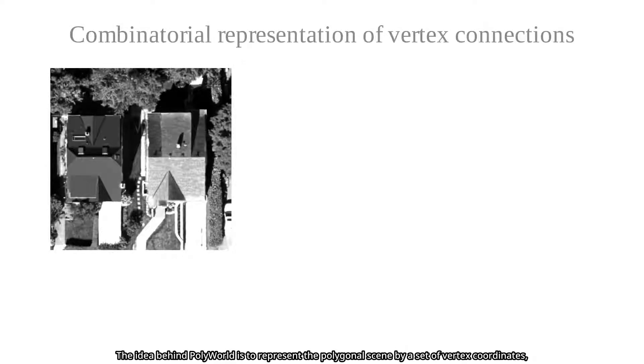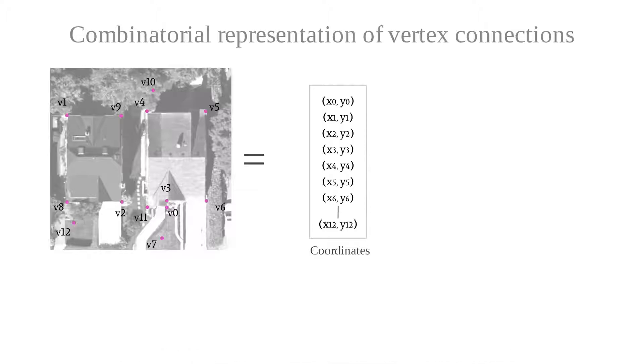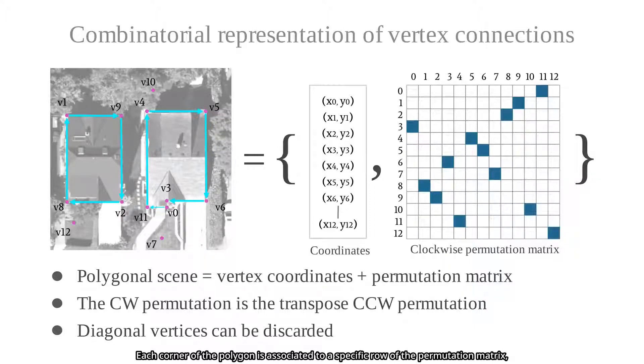The idea behind PolyWorld is to represent the polygonal scene by a set of vertex coordinates and by a permutation matrix that encodes the connections between vertices. Each corner of the polygon is associated with a specific row of the permutation matrix that indicates the next clockwise connection.